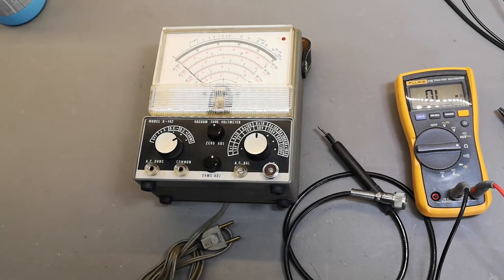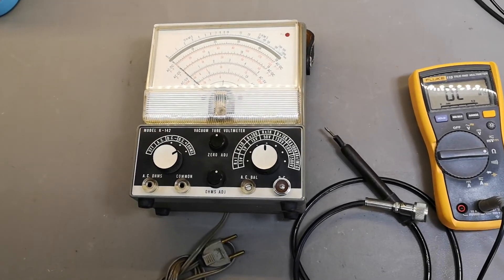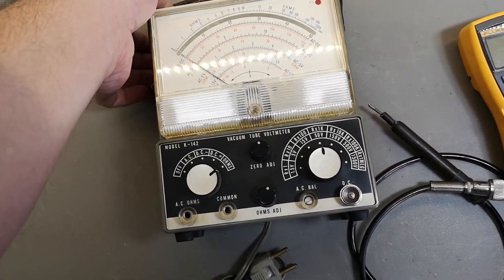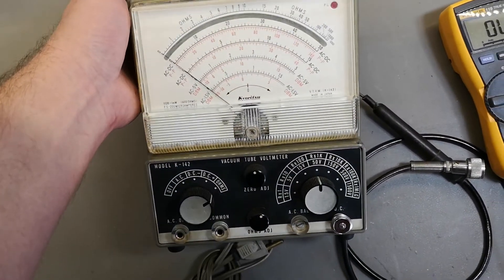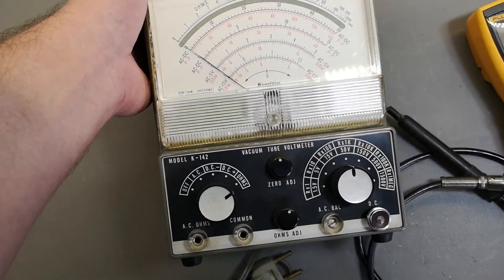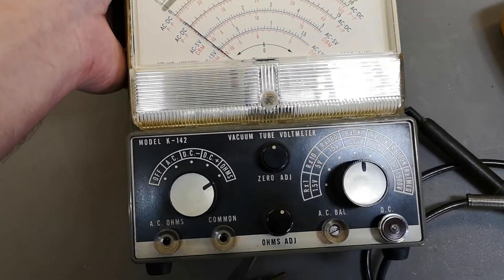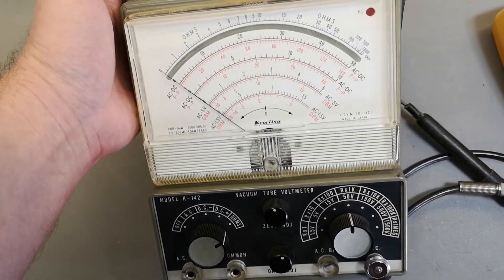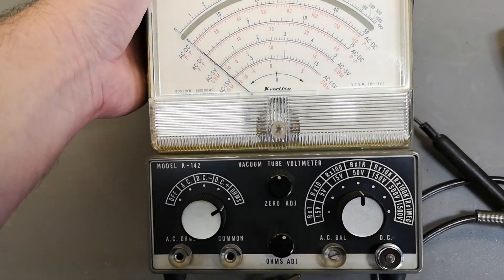Welcome to a new teardown and test video. This time it's a vacuum tube voltmeter, but it's actually a multimeter because it will measure not only volts, but AC volts, ohms, and DC voltage.